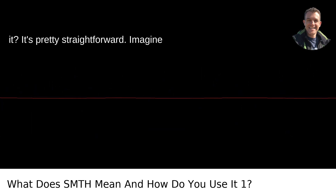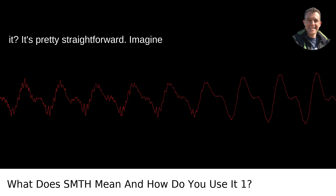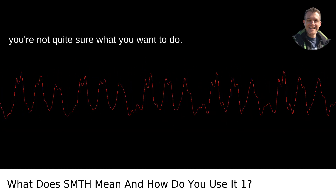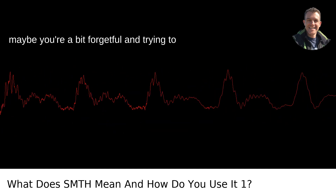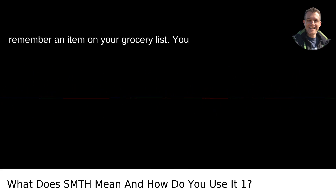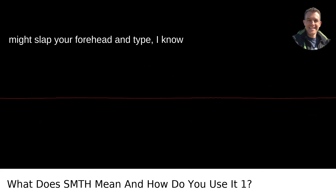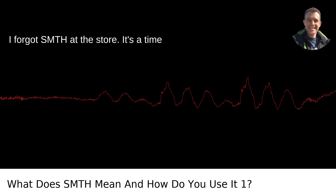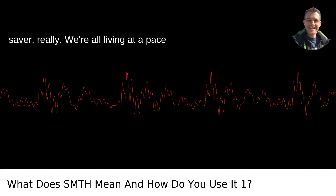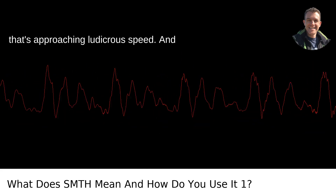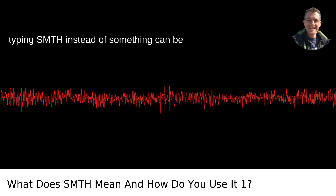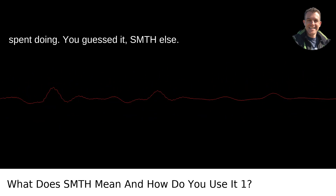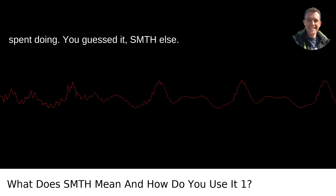How do you use it? It's pretty straightforward. Imagine you're texting a friend about plans, and you're not quite sure what you want to do. You might say, let's do SMTH tonight. Or maybe you're a bit forgetful and trying to remember an item on your grocery list. You might slap your forehead and type, I know I forgot SMTH at the store. It's a time saver, really. We're all living at a pace that's approaching ludicrous speed, and those precious seconds we shave off by typing SMTH instead of something can be spent doing — you guessed it — SMTH else.